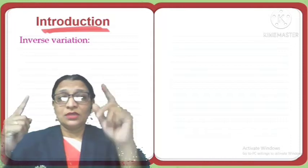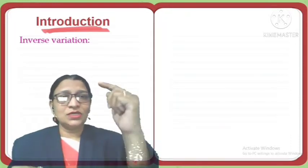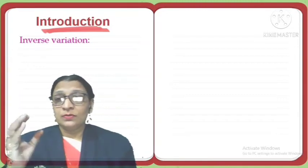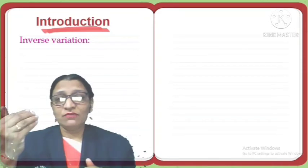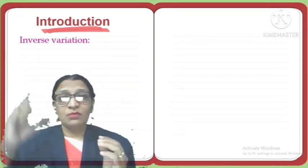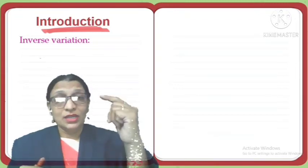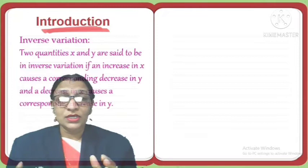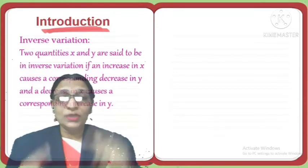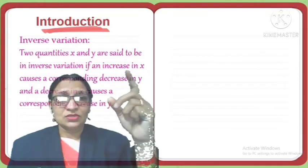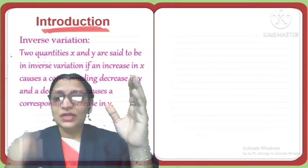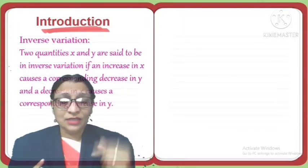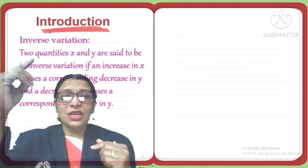If one quantity increases, the other quantity decreases, or if one quantity decreases, the other quantity increases. For example, to complete any piece of work, if the number of men increases, the time required for completing the work decreases. And opposite to it, if the number of men decreases, then the time required increases.